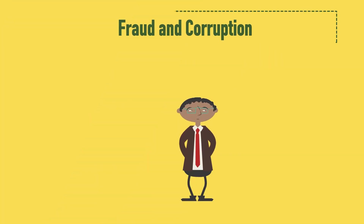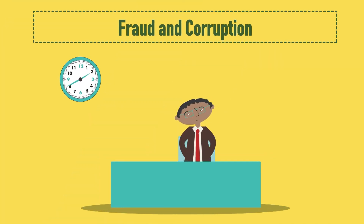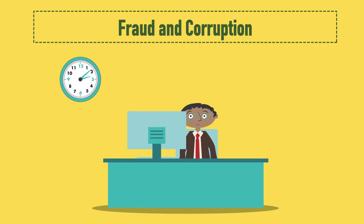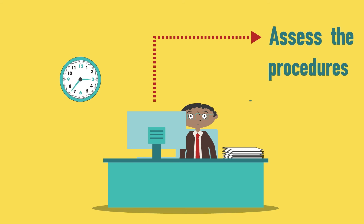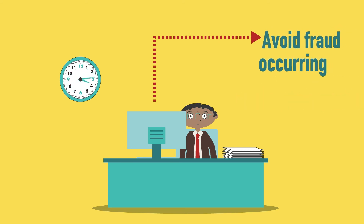Fraud and corruption. Banks need to examine historic accounts and records to identify if fraud has been an issue before, and assess the procedures and processes in place at the association so as to avoid fraud occurring.